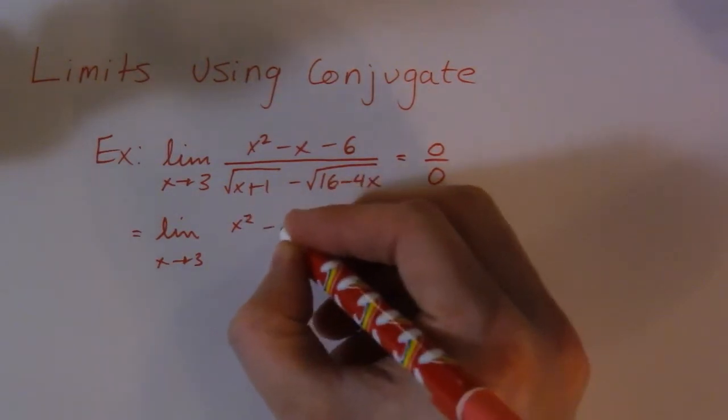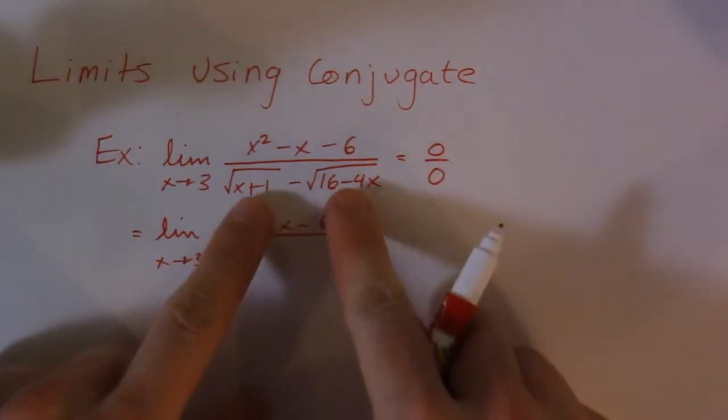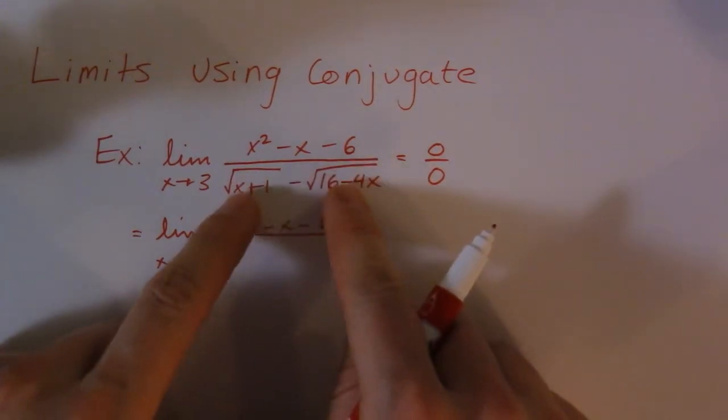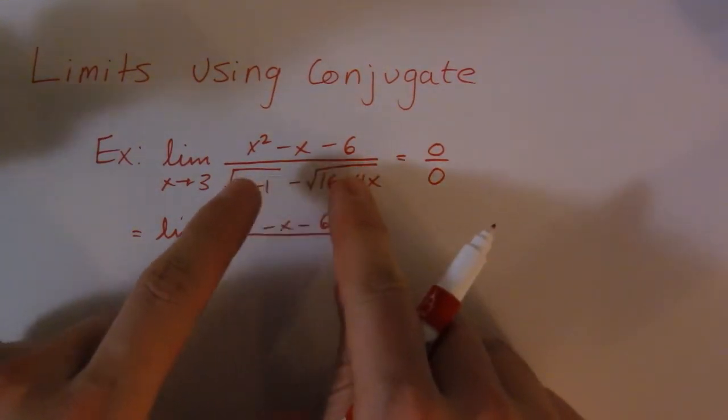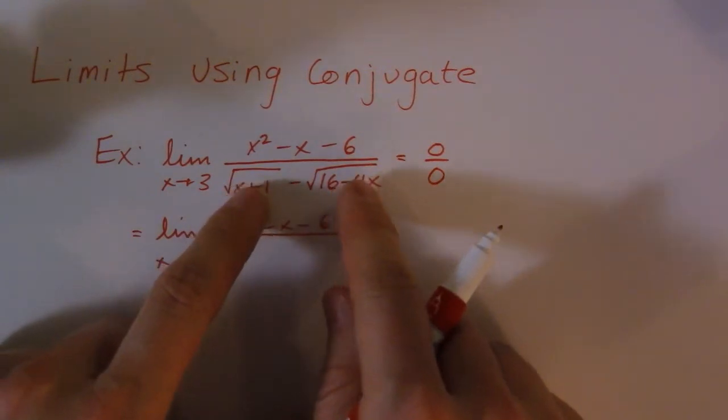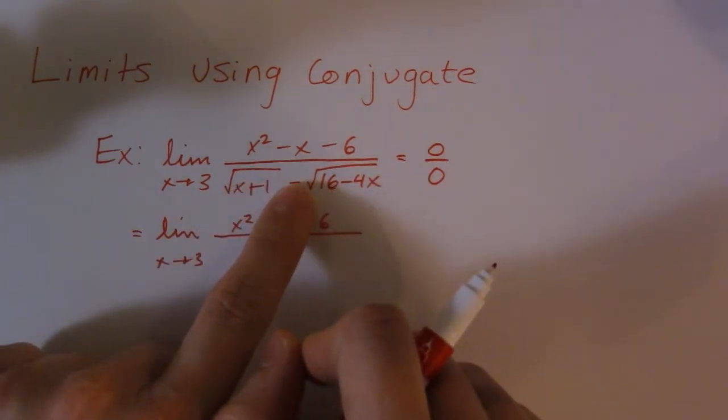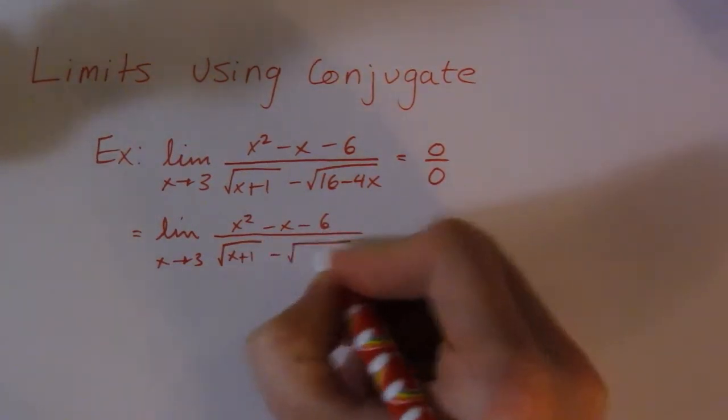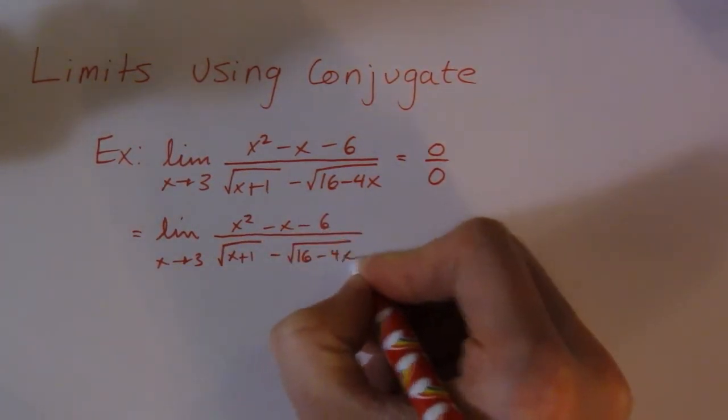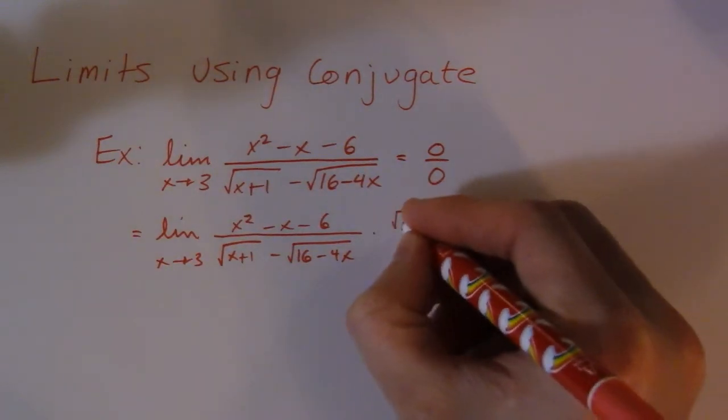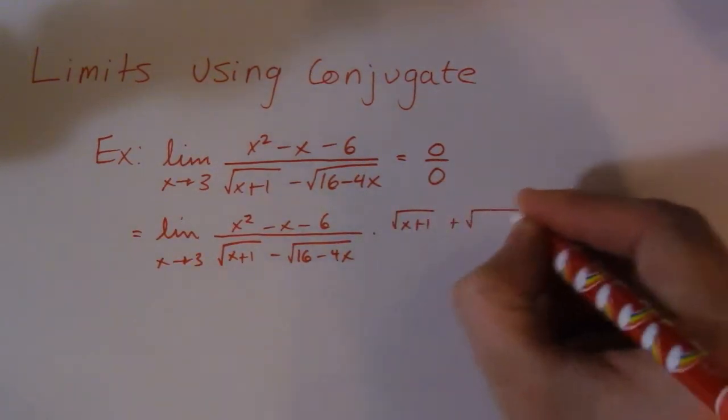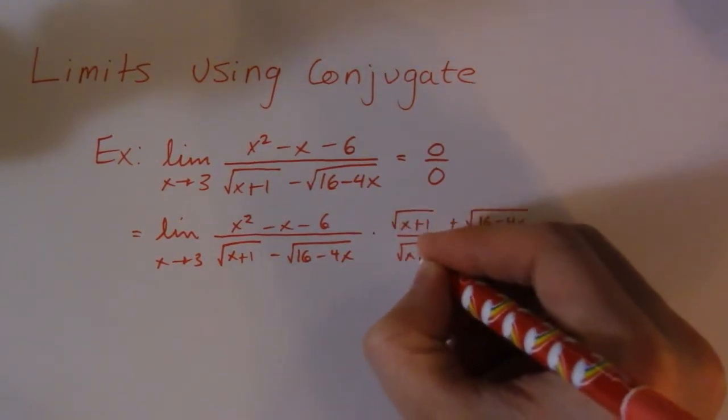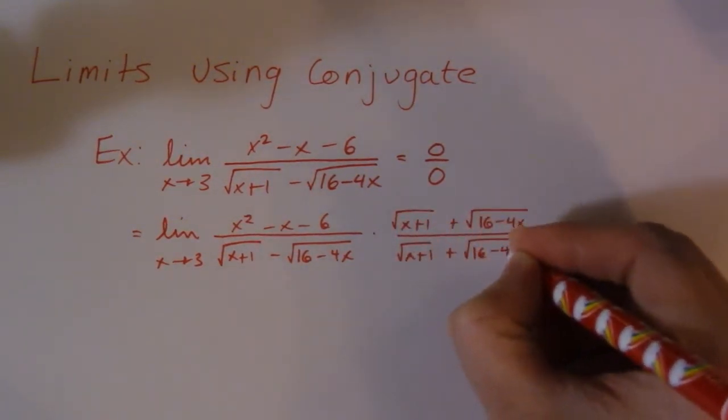So the conjugate, all it is, is when I change the sign in between two of my terms. You don't really need roots to have a conjugate. If you've got two terms, the conjugate of those two terms is the opposite sign in the middle. So what I'm going to do is multiply the top and the bottom by that conjugate. So multiply by square root of x plus 1 plus square root of 16 minus 4x all over square root of x plus 1 plus square root of 16 minus 4x.